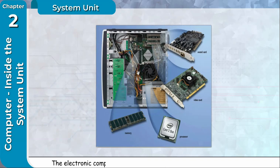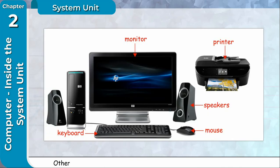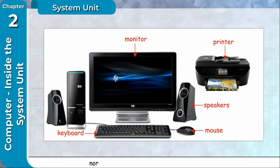The electronic components and most of the storage devices of a computer reside inside the system unit. Other devices such as keyboard, mouse, monitor, printer, speakers etc. normally occupy space outside the system unit.